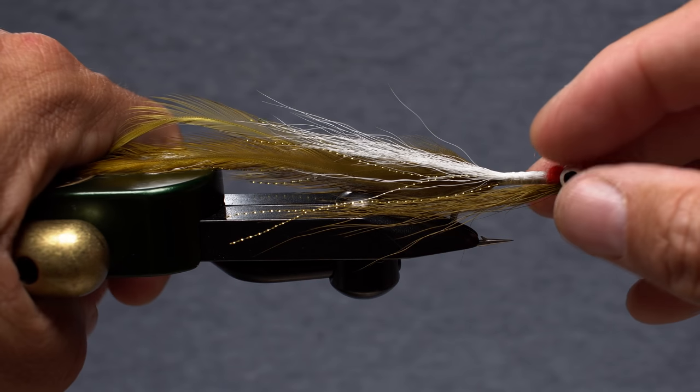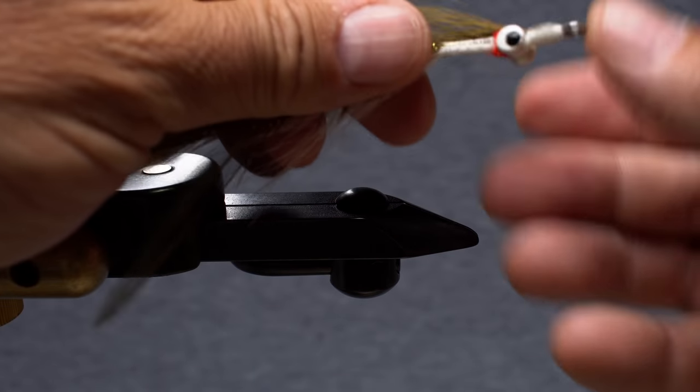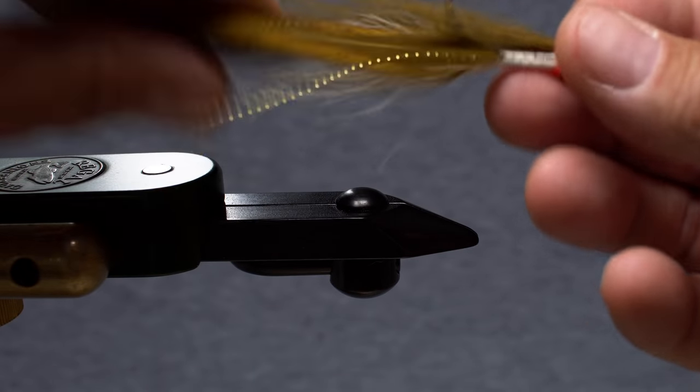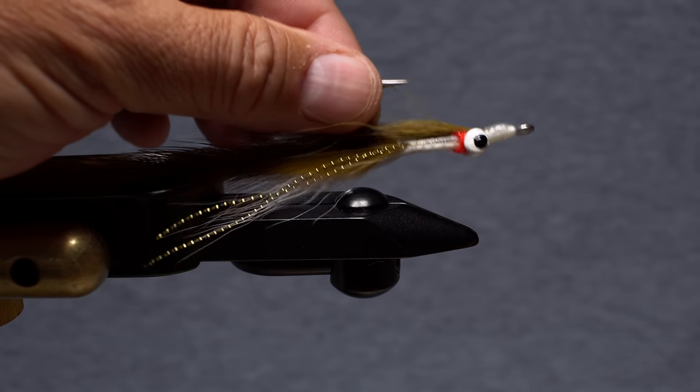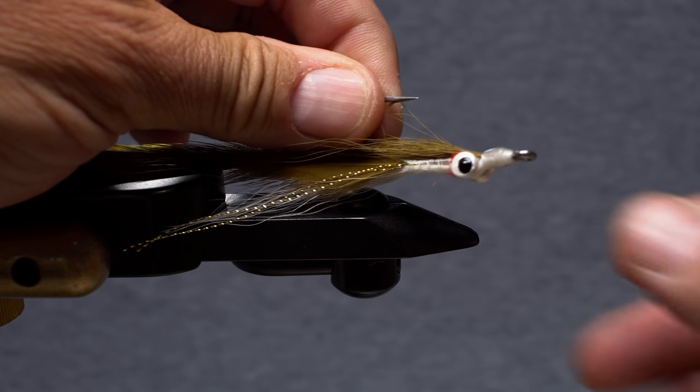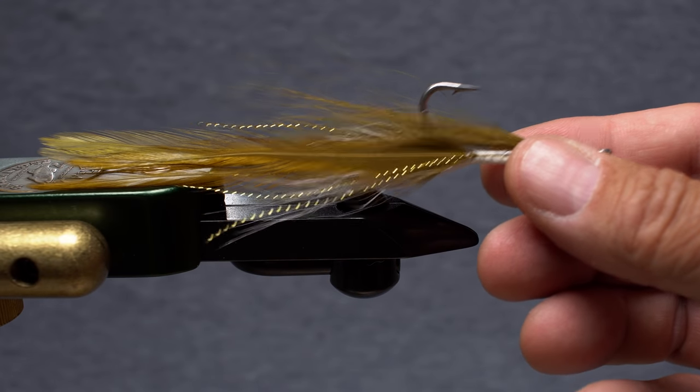And that's the half-and-half. They ride with the hook point up and have the jiggy motion of a Clouser but also have the longer body and tail movement of a Lefty's Deceiver. It's an all-around fabulous fly.